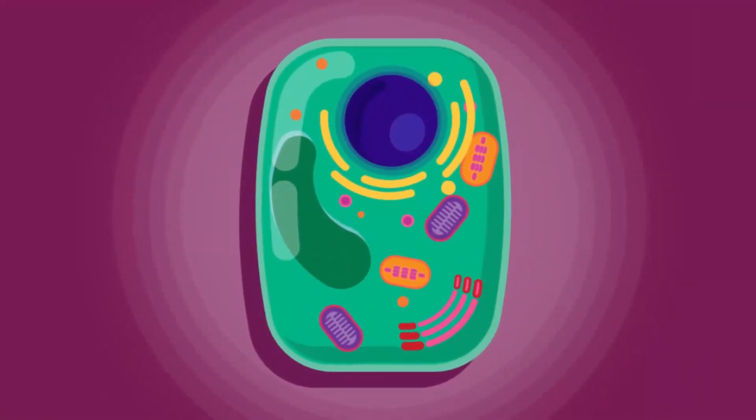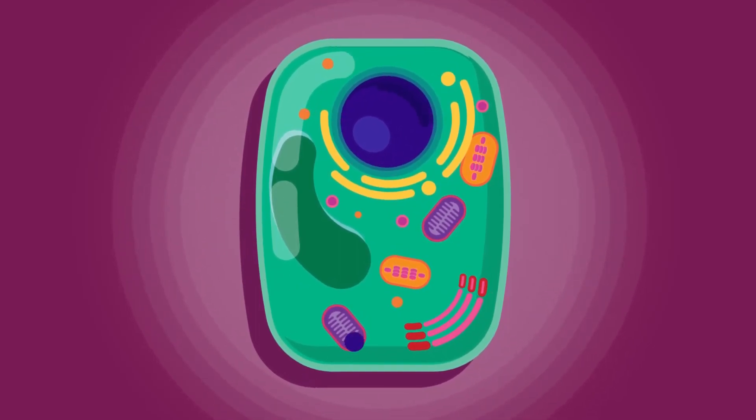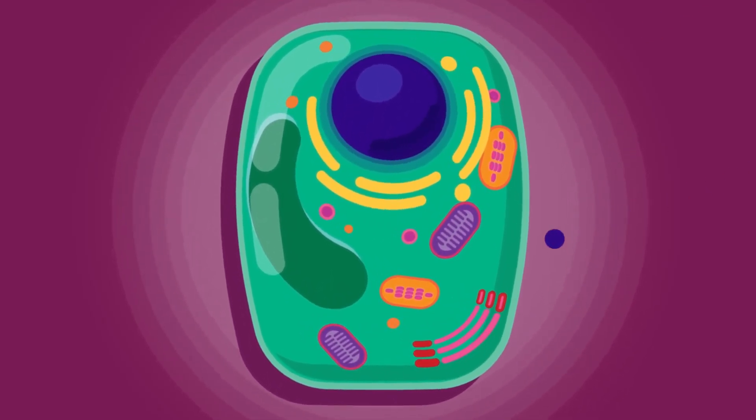The cell wall gives the plant cell a definite shape, preventing the cell from bursting when water enters by osmosis.